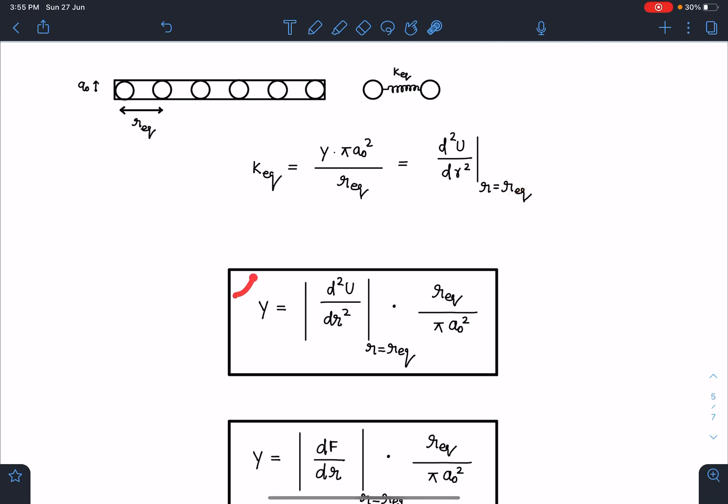This value must be equal to double derivative of potential energy at r = r_eq. When I rearrange these terms, Young's modulus result I can obtain is |d²U/dr²| at equilibrium times r_eq divided by cross-section area, which is πa₀². I hope guys you will remember this result. I'll recommend you to remember this result for fast calculations. It's a general result, always valid.